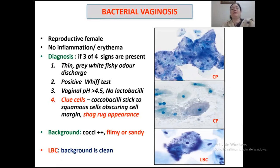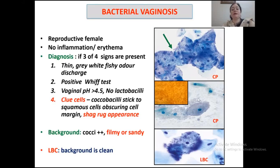Additional diagnostic criteria include vaginal pH greater than 4.5 due to lack of lactobacilli, and presence of clue cells as shown by green arrow. Clue cells appear when there is a rise in vaginal pH. Gardnerella vaginalis, a small comma-shaped coccobacillus, sticks to squamous epithelial cells like a velvety coat and obscures the cell margin, giving a shaggy appearance. In conventional smear, the background shows many cocci giving a filmy or sandy appearance, shown by red arrow. In LBC, the background is usually clean.